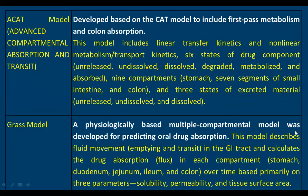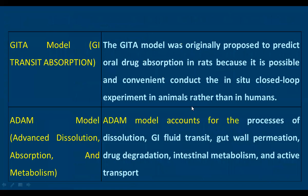The GRASS model is a physiologically-based multi-compartment model that predicts oral drug absorption, describing fluid movement, emptying, and transit — particularly time-dependent flux for the stomach and duodenum. It specifically accounts for solubility, permeability, and tissue surface area. The GITA model was originally proposed to predict oral drug absorption in rats. The ADAM model handles processes of dissolution trend, gut wall permeation, drug degradation, intestinal metabolism, and active transport.